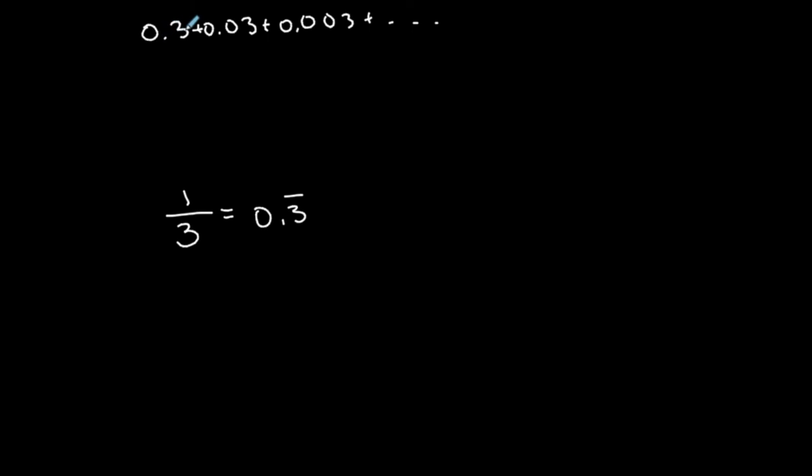So if I say 0.03 plus 0.003 plus 0.0003, this is going to turn into, you know, three repeated, isn't it? So therefore, there is a sum of this infinite case because if this three keeps repeating, then it is equal to one-third.